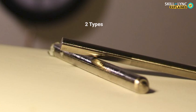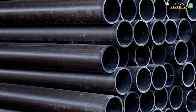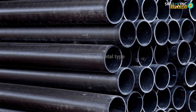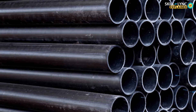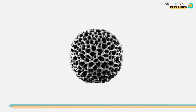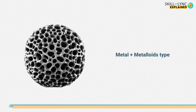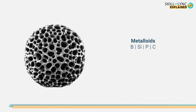Metallic glasses can be classified into two types based on their constituent elements: the metal-metal type and the metal-metalloid type. If the metallic glass is made of metals alone, it is said to be metal-metal type. Examples are nickel-neodymium and magnesium-zinc metallic glasses. On the other hand, if one or more metalloids is added to the metal, it is said to be metal-metalloid type. The metalloids usually added are boron, silicon, phosphorus, and carbon, and they are typically added to metals like iron, nickel, and cobalt.